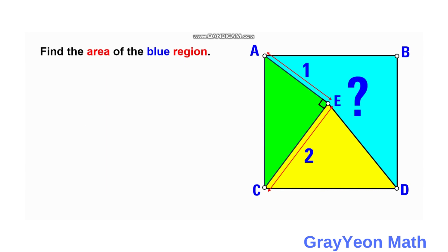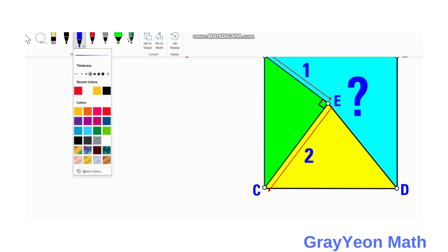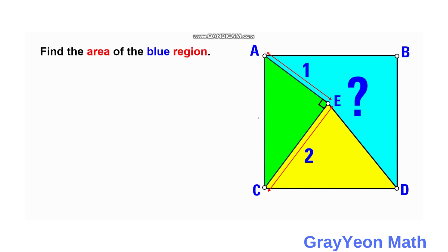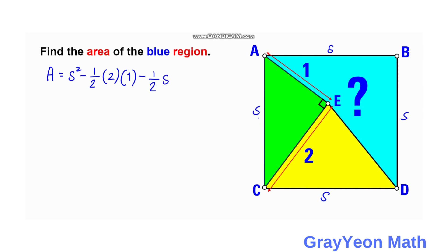Our idea for this problem is simple. We just have to write an equation about the area of the square. Area equals S squared — if we denote the side as S — and we subtract the areas of the two triangles. For the green triangle: one half times base 2 times height 1. Then minus one half times S (the base of the yellow triangle) times an unknown height.